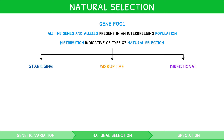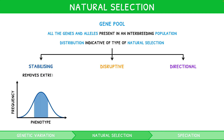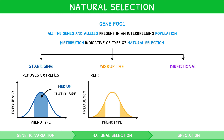Stabilizing natural selection occurs when selection pressures remove the extremes of a phenotype. For example, the clutch size of eggs are mostly medium in number, as too few eggs decreases survival rate, whereas too many increases predation. Disruptive natural selection occurs when selection pressures remove the intermediate phenotype. For example, the beak of the red crossbill is either crossed left or right, but never straight, as the crossing allows it to extract conifer cones and obtain food.